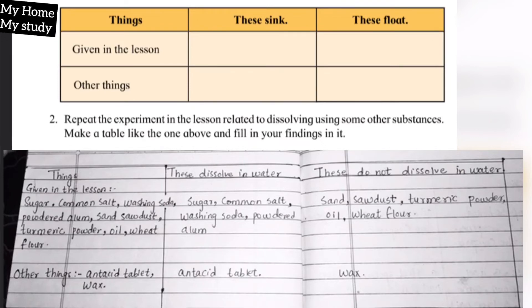Which things will dissolve in water? Sugar, common salt, washing soda powder, alum. And these things will not dissolve in water: sand, sawdust, turmeric powder, oil, and wheat flour. Second, antacid tablet will dissolve and wax will not dissolve.